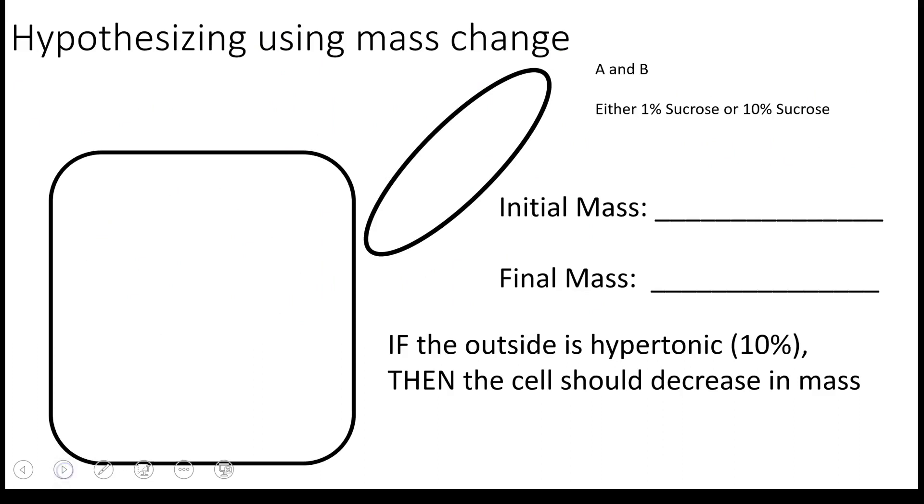Here's what that setup looks like. Let's say that A solution goes in your artificial cell and you're going to surround it with B solution. You don't know if A is the 1% or the 10%, and same thing with B. But you can figure that out based on mass change. Practice making your hypothesis here. Say to yourself, if the outside of the cell is hypertonic, so if in this scenario B is 10% making A 1%, what would happen?